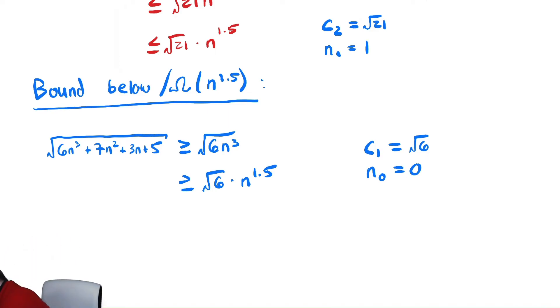So, the only real choices we have are c2 is this, n naught is that, and c1 is that. With those three choices, we've identified that it is in theta because we bounded it below and above by constants times n to the 1.5.